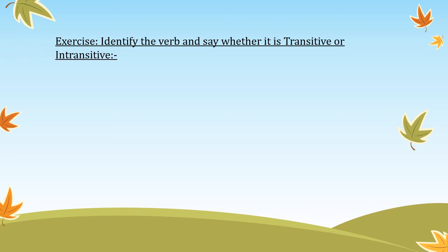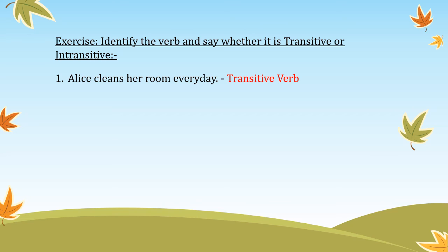Now let us do a small exercise to understand transitive and intransitive verbs clearly. 'Alice cleans her room every day.' In this sentence, Alice is the subject, clean is the verb, and the action of cleaning is transferred to the room, so the object is room. This is a transitive verb.